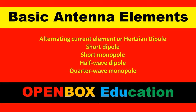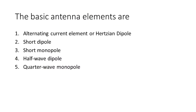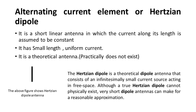Welcome to Open Box Education. In this video you will learn about basic antenna elements. The basic antenna elements are: alternating current element or Hertzian dipole, short dipole, short monopole, half wave dipole, and quarter wave monopole.